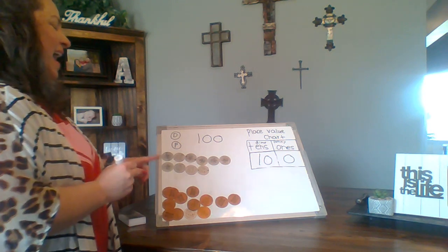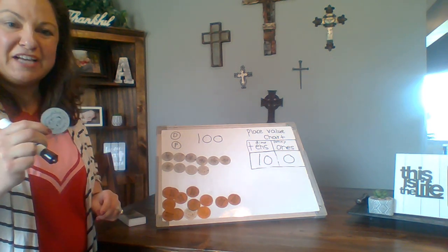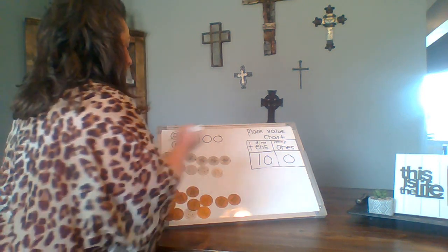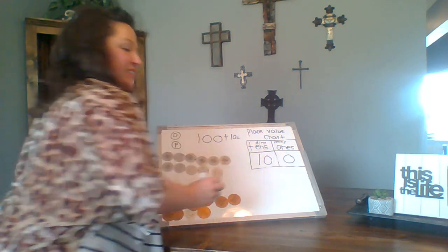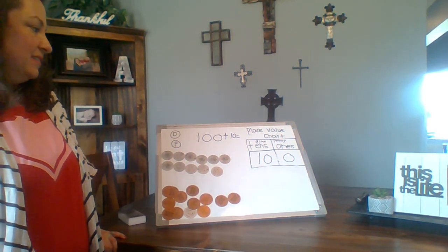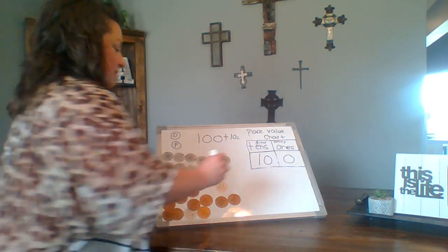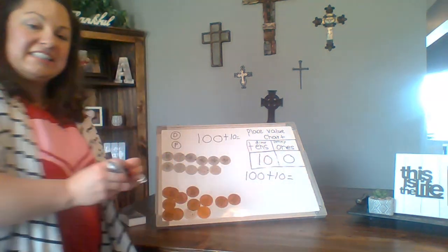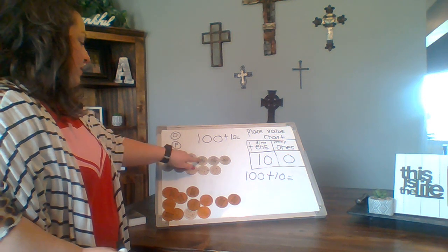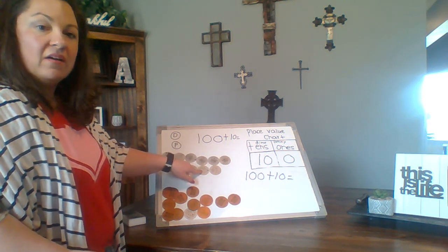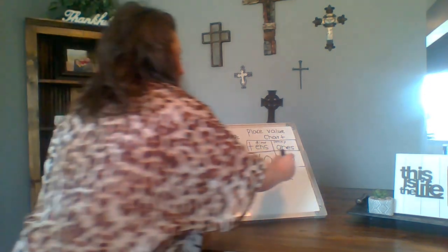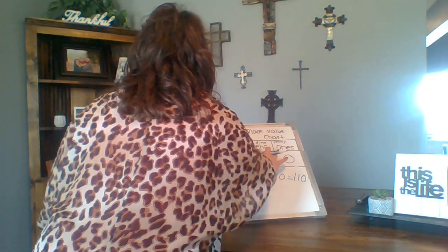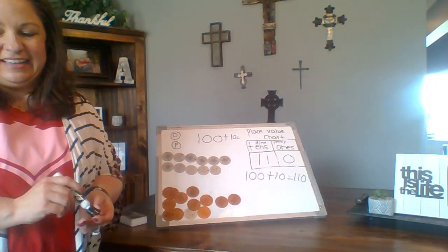Now, what if I added another dime? Remember, a dime is 10. So what is 100 plus 10? Remember, 10 dimes was 100, but now we have 11 dimes — we added another 10. Let's count by 10: 10, 20, 30, 40, 50, 60, 70, 80, 90, 100, 110. It's 110. So if I had 11 tens and 0 ones, that's 110. Good job.